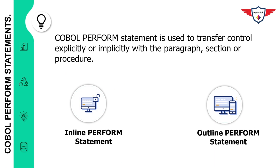COBOL programs are generally made up of three logical structures: sequence, selection, and iteration. In layman's terms, the COBOL perform statement is used to transfer control explicitly or implicitly within a paragraph, section, or procedure. The perform statement in COBOL is divided into two categories: inline perform and outline perform.